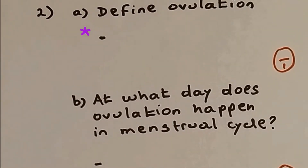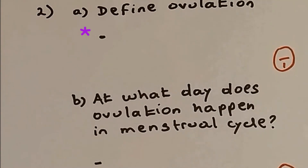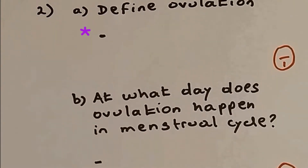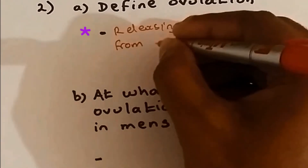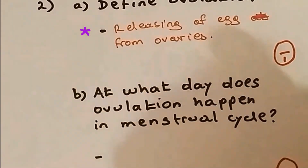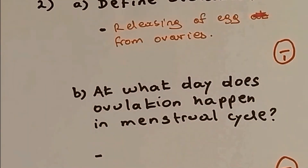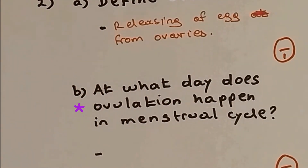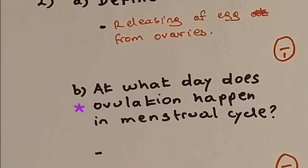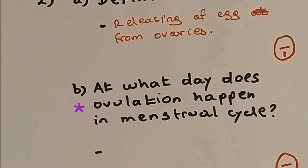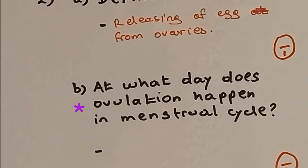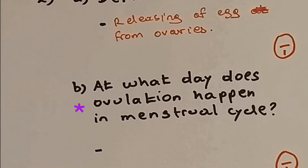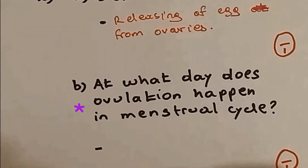Question 2a: Define ovulation. Ovulation means the releasing of an egg from the ovaries. Question 2b: At what day does ovulation happen in the menstrual cycle? Ovulation happens at day 14.